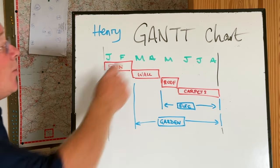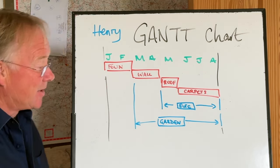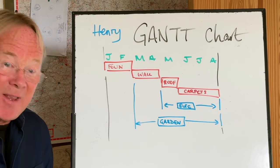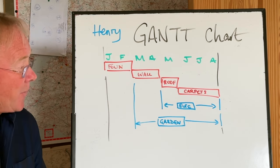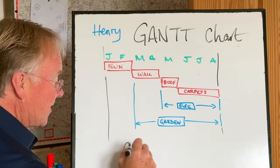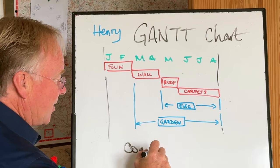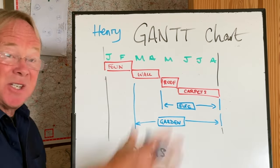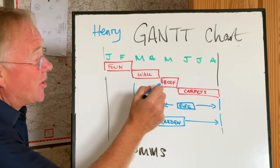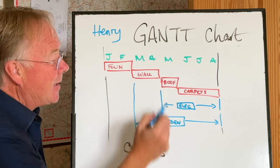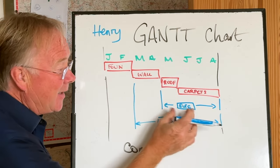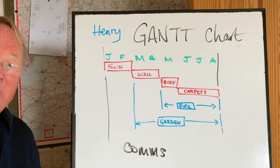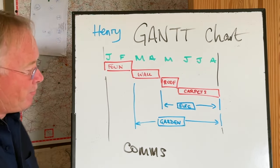Why would we want one of these Gantt charts? There are three reasons why they're great. The first one is just communications — just explaining to people, this is the plan. That's your bit there, it's going to happen in May. That's your bit there, it's a floating task. So everybody can see the plan mapped out.